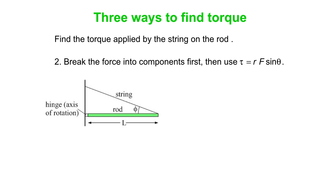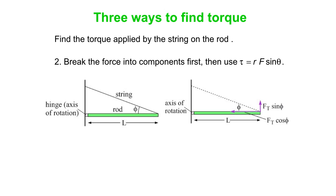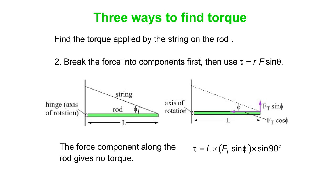Method two: break the force into components, then use torque equals RF sine theta. You can break the tension force into a horizontal component and a vertical component. Note that the horizontal component, FT cosine phi, goes right back through the axis of rotation — that's just like trying to open a door by pushing toward the hinge; it doesn't do anything. So it's only the FT sine phi piece that gives any torque. We measure R along the rod — the full length L — the force is FT sine phi, and then sine of 90 degrees is one. So we again get LFT sine phi, the same result as method one. The force component along the rod gives no torque whatsoever.